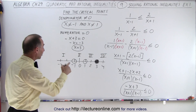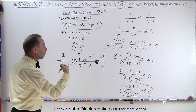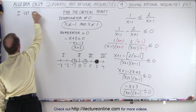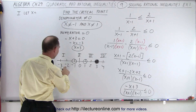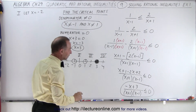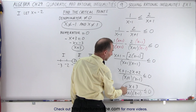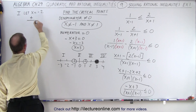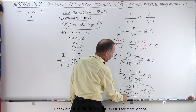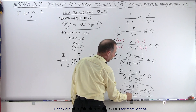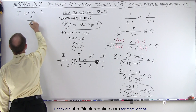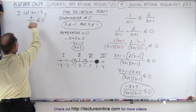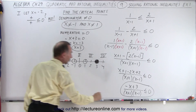We pick representative values for each of the four regions. For region one, let x equal negative two. Plugging in: negative times negative two is positive two, plus three equals five — positive numerator. In the denominator, negative two plus one is negative and negative two minus one is negative; negative times negative is positive. Is that less than or equal to zero? No — two positive numbers give a positive result, so this region is not included.